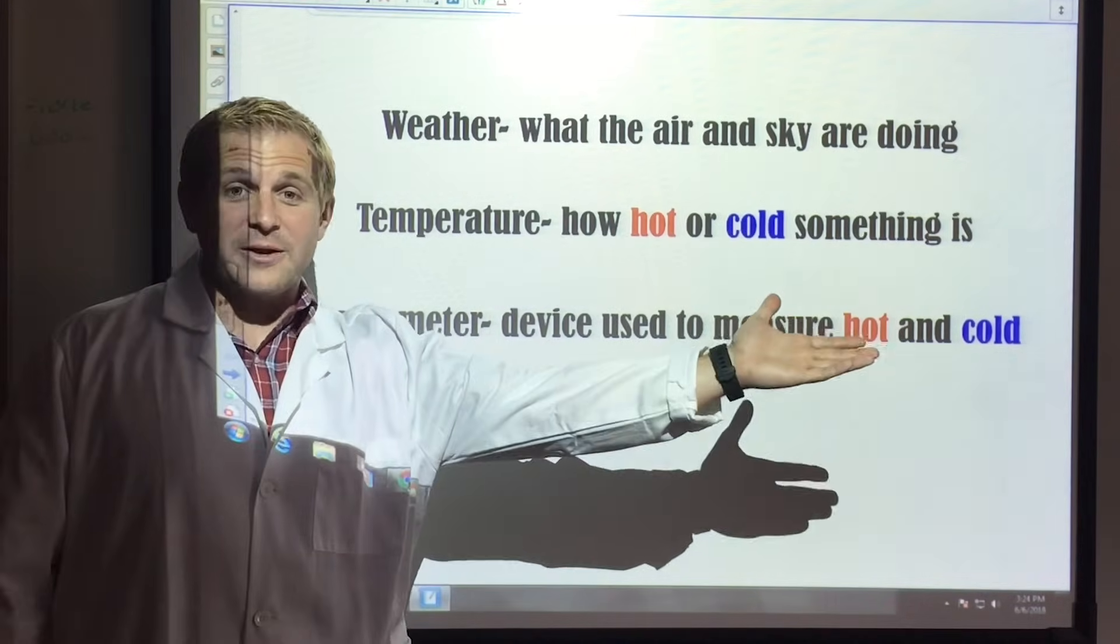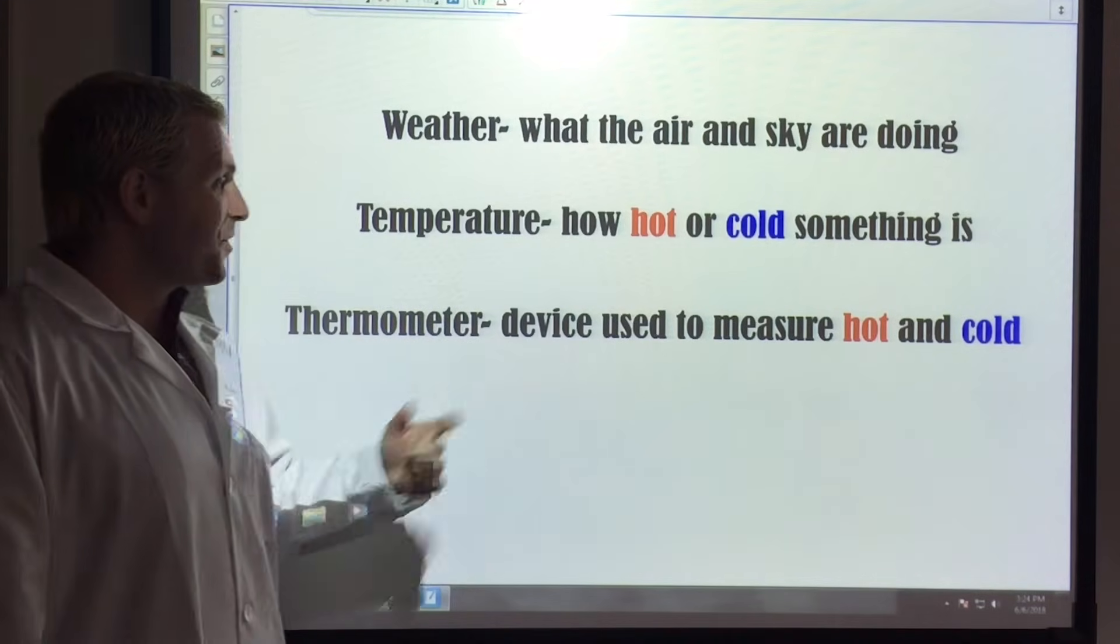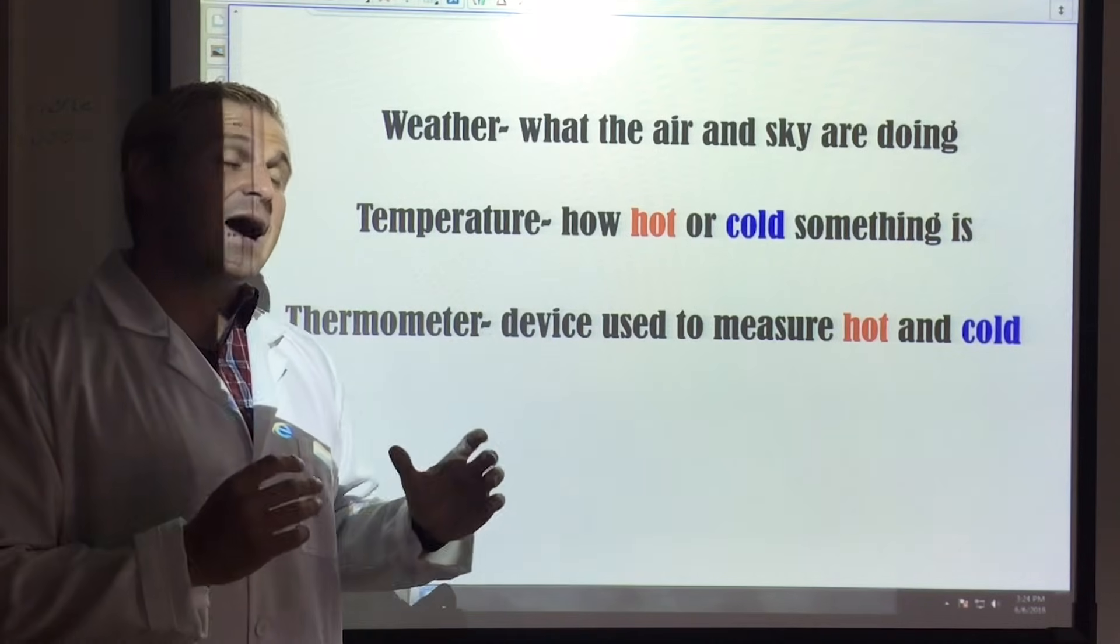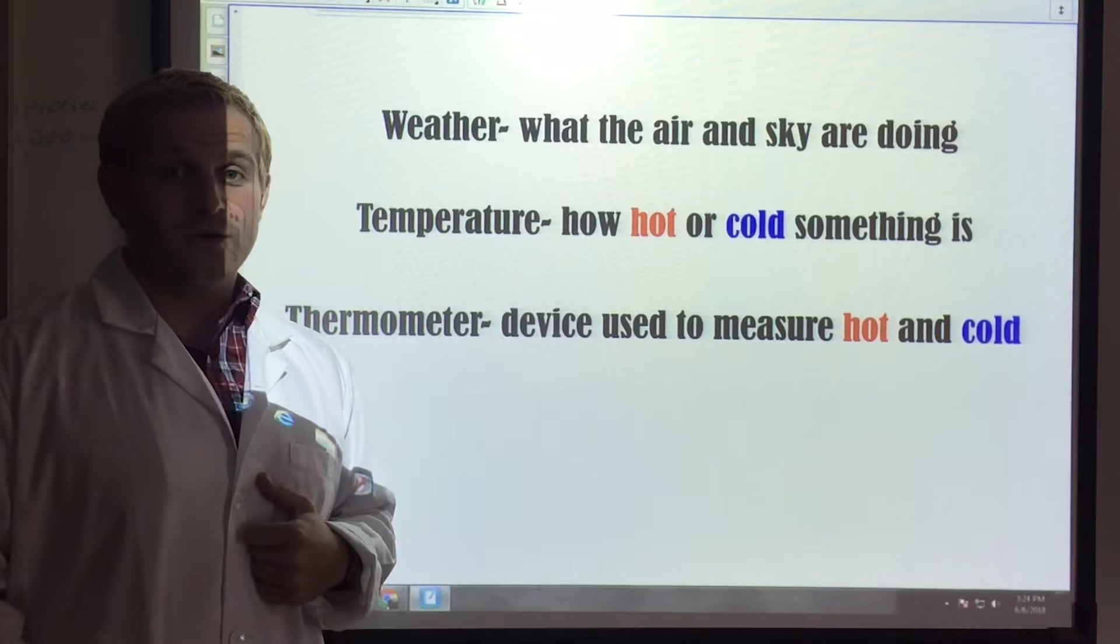Open your window, stick your arm out, and you can tell if it's hot or cold out. And then a thermometer. A thermometer is a device used to measure exactly how hot or cold something is, usually in degrees, either Celsius or Fahrenheit.